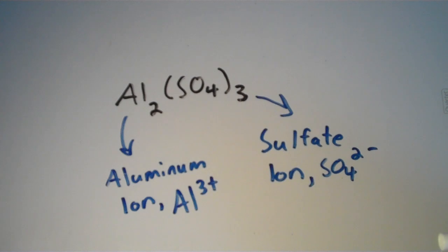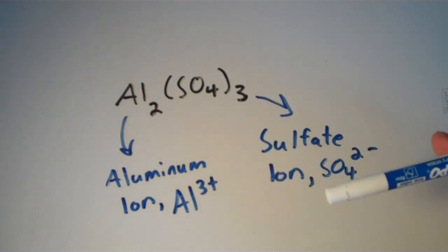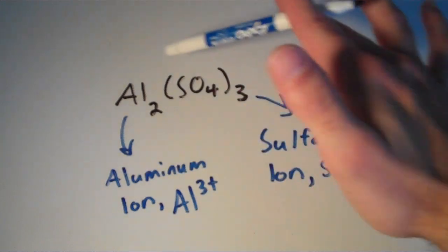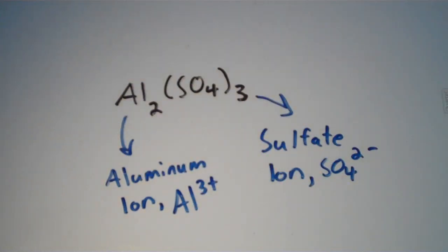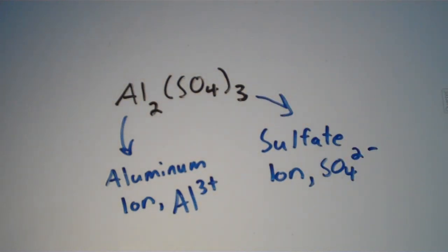And notice that there are three sulfate ions at negative 2 charge apiece that neutralize the two aluminum ions, which are at 3+ apiece. So this thing is definitely electrically neutral overall. If it wasn't, then we would have some kind of charge over here, and we don't. So this is a valid formula.